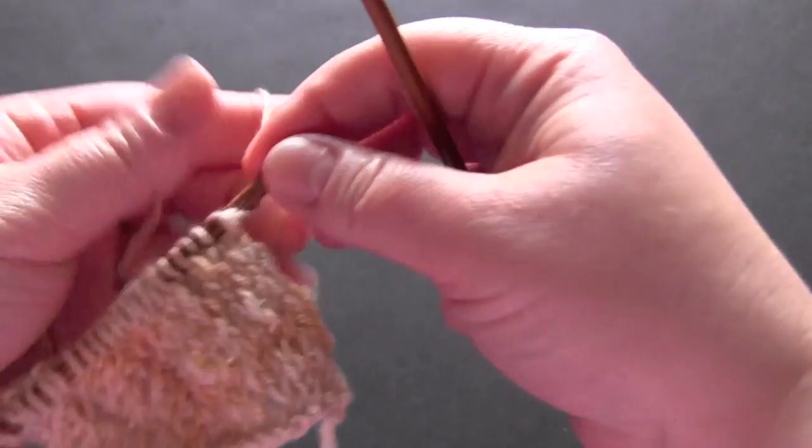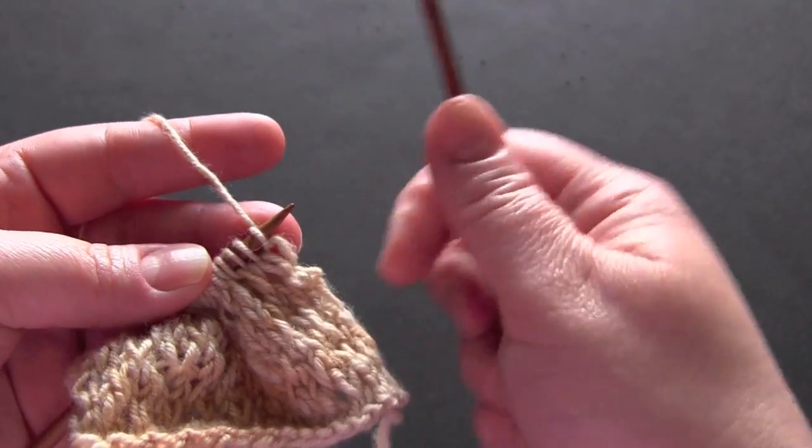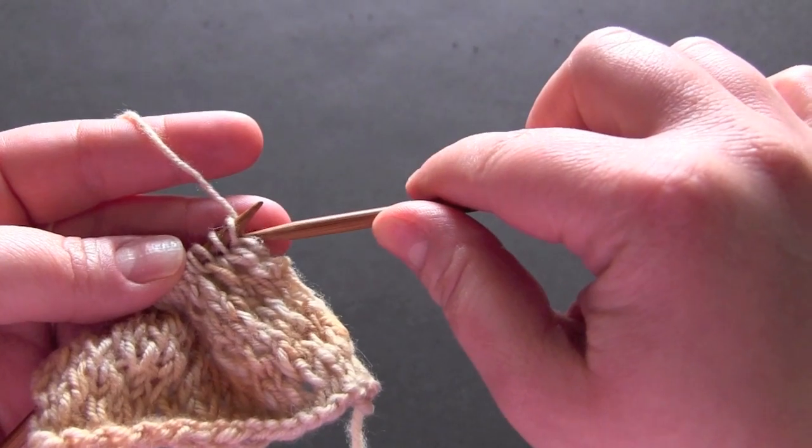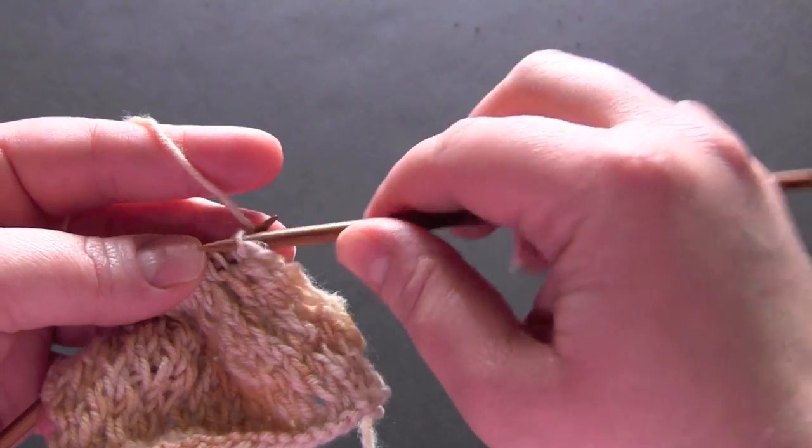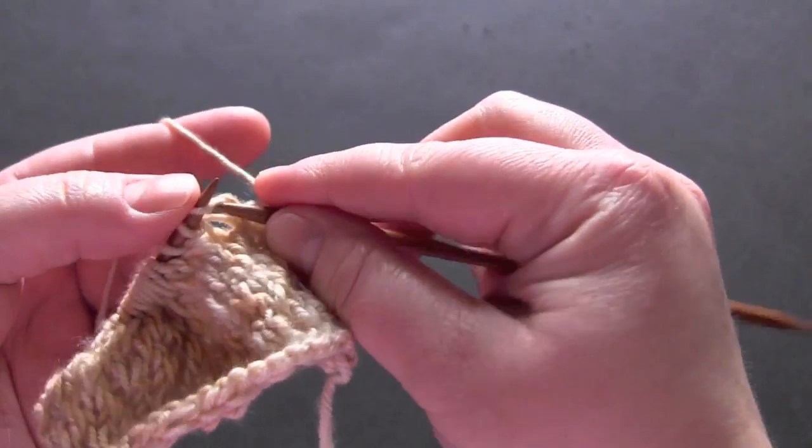And for row three, this time we're going to start with a slipped stitch. So you just slip and then knit across the row.